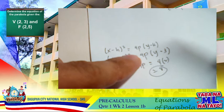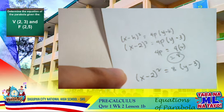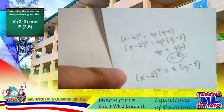All we need to do this time is simply substitute this 8 to our 4p. So again, we just rewrite quantity x minus 2 square equals 8, quantity y minus 3. This is now our equation of your parabola given the vertex and the focus.